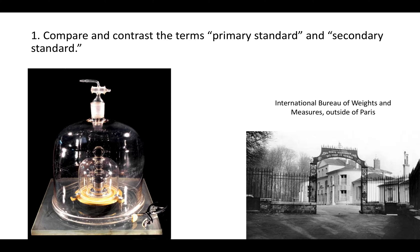As an example to clarify this, let's think about the kilogram. Every time you weigh something in grams or as a kilogram, it's comparing it to a piece of metal underneath two vacuum-sealed glass bell jars in a vault at the bottom of a basement of the International Bureau of Weights and Measures outside of Paris. You can see that building here, and a picture of the original primary standard of the kilogram underneath those two bell jars.